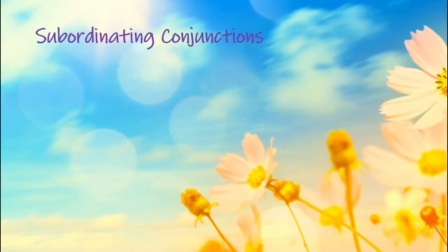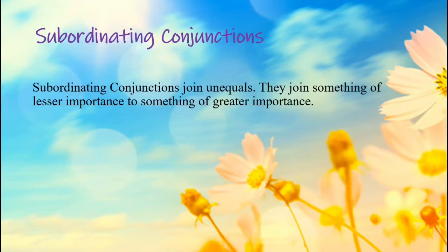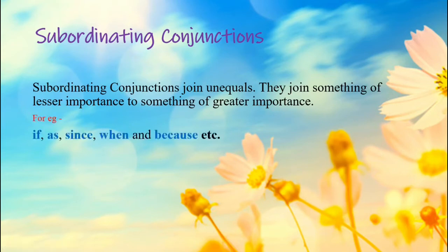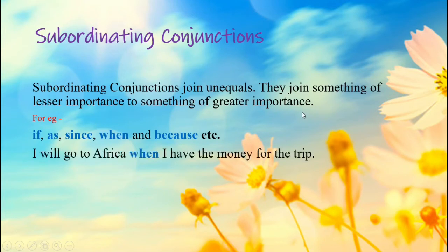Let's now read about the subordinating conjunctions. The subordinating conjunctions join the unequals — that is, they join something of lesser importance to something of greater importance. Examples of subordinating conjunctions include IF, AS, SINCE, WHEN, and BECAUSE, etc. Let's now use them in sentences for better understanding.